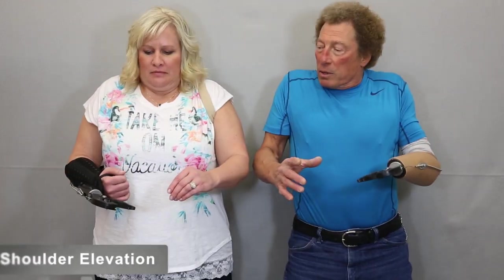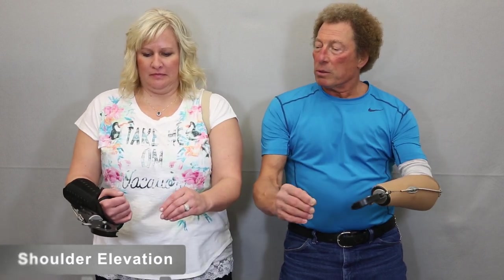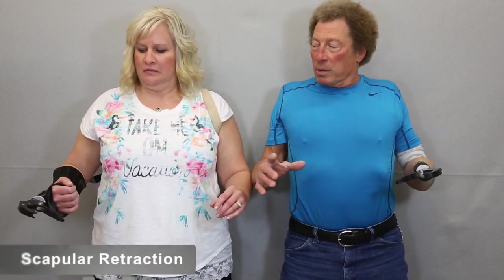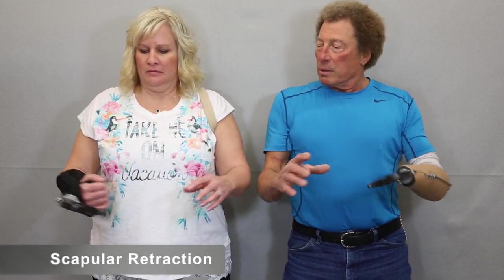Bilateral shoulder elevation, shoulder shrugging, reverses excursion and decreases cable tension. And scapular retraction, squaring shoulders, reverses excursion and decreases cable tension.